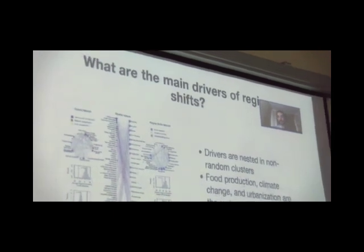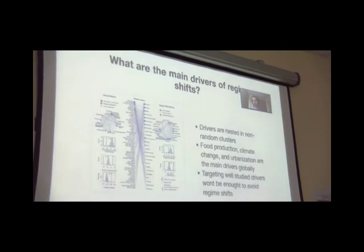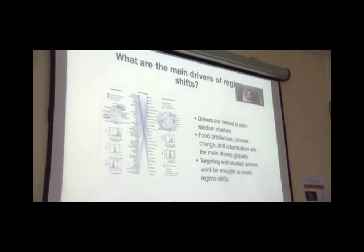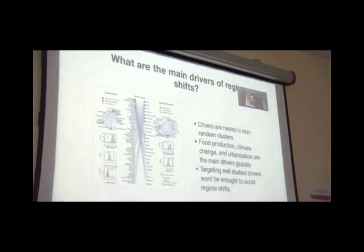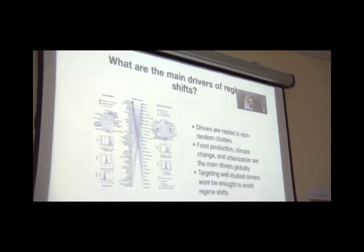For example, we can use the database to understand what are the main drivers of regime shifts by using a technique called bipartite networks, and we can understand the patterns of drivers at a global scale. We found that these drivers are nested in non-random clusters, and the most important drivers are related with food production, agriculture, fishing, use of fertilizers, also to climate change and urbanization. It also teaches that given that they are clustered in non-random clusters, targeting a few study drivers won't be enough to avoid regime shifts, and we will need to address the cluster as a whole.